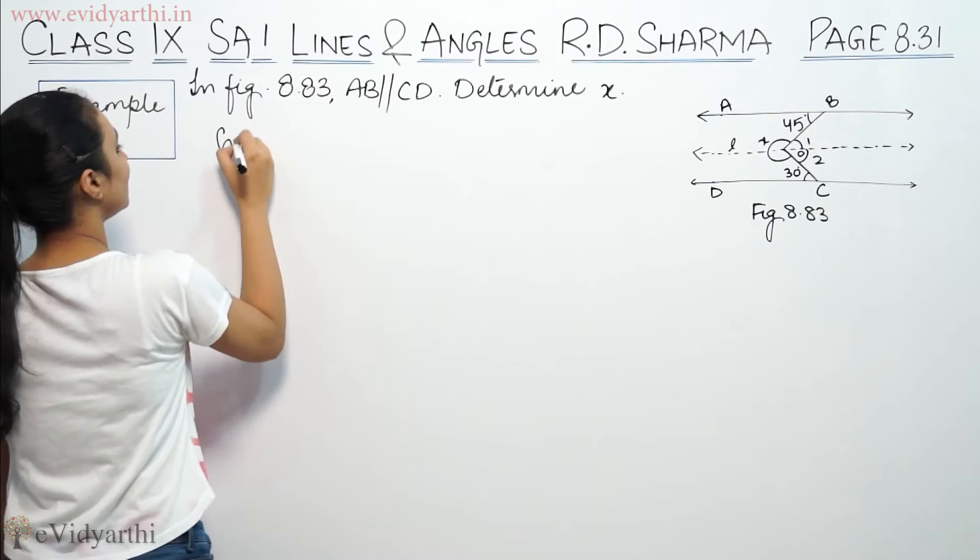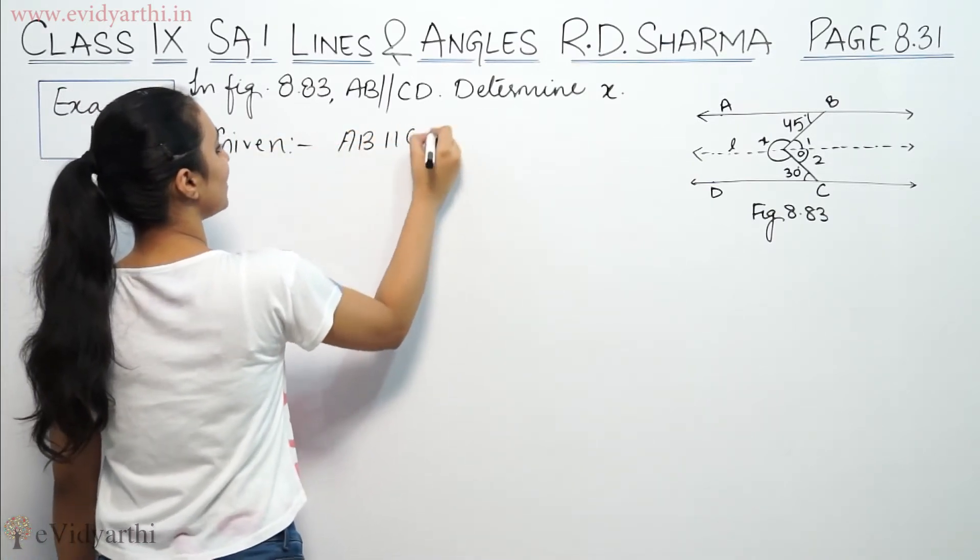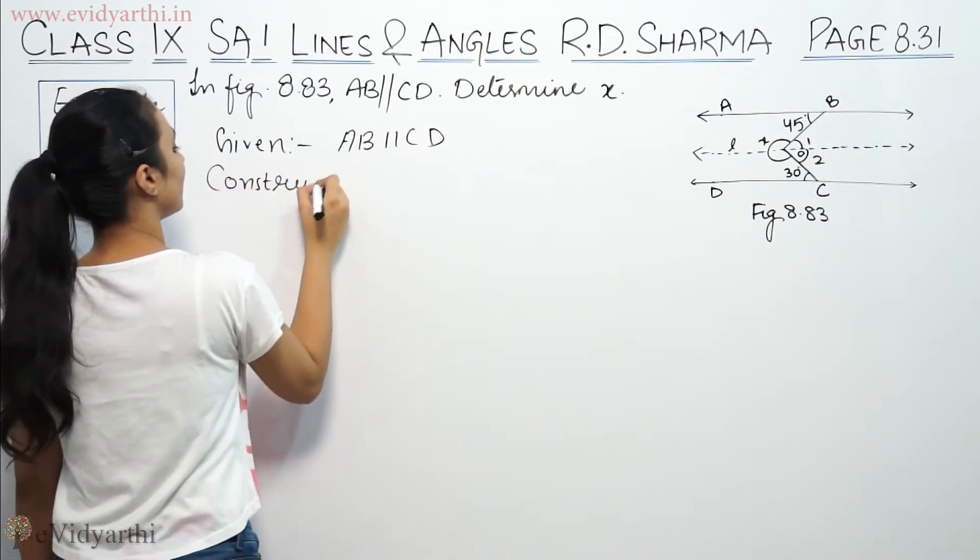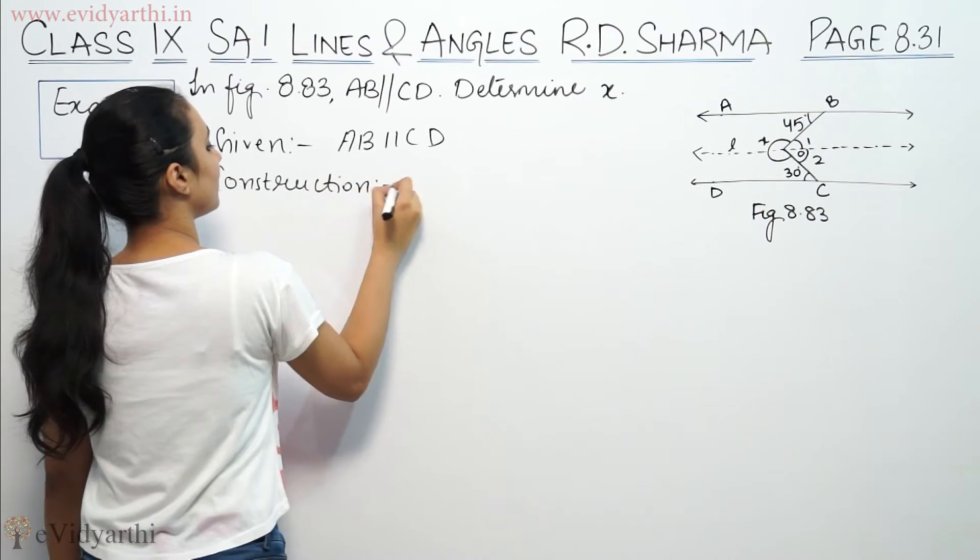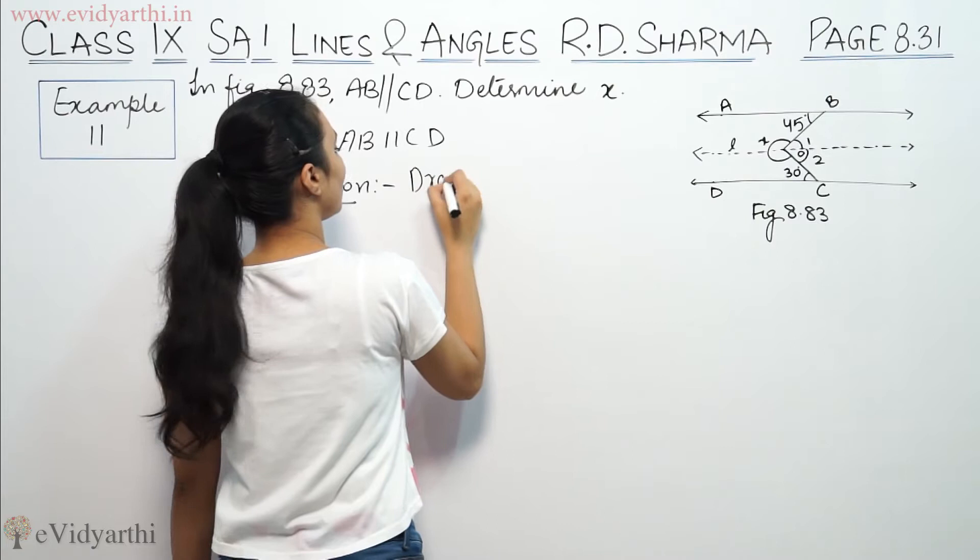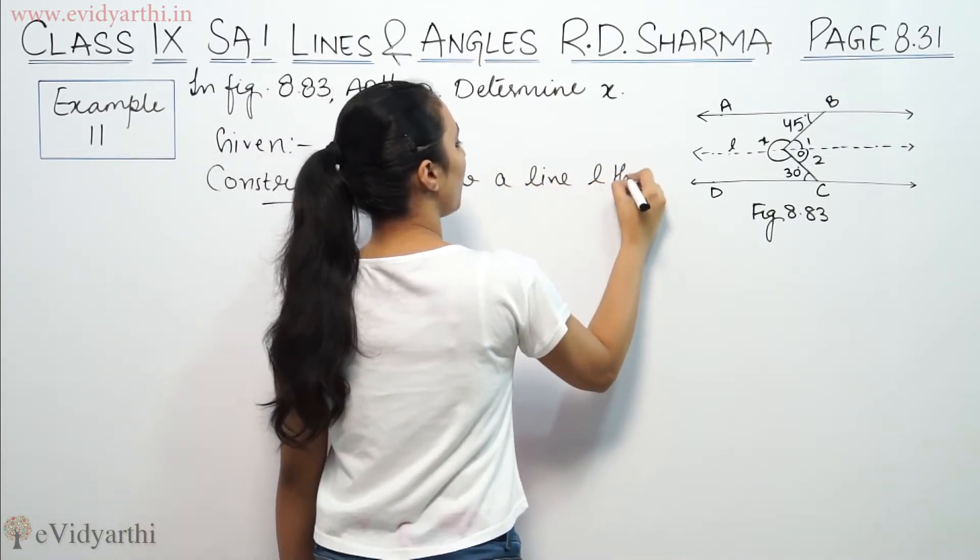So first we write: Given - AB is parallel to CD. And construction - in this case, line L. Draw a line L through O.